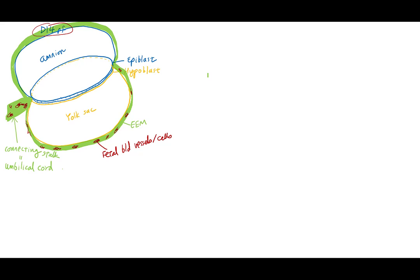A couple of new structures to note at day 14: there are two little indentations on the bilaminar germ disc where the epiblast and hypoblast are tightly sealed together. These indentations are called the oropharyngeal membrane — on the opposite end from where the connecting stalk is — and the cloacal membrane, really close to the connecting stalk. These two membranes are actually the beginnings of the openings into our gut tube.